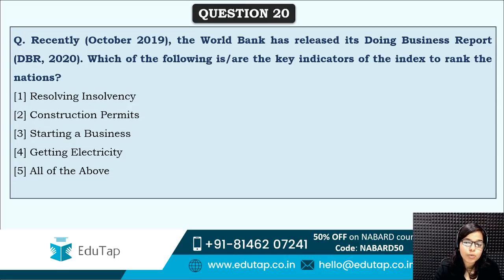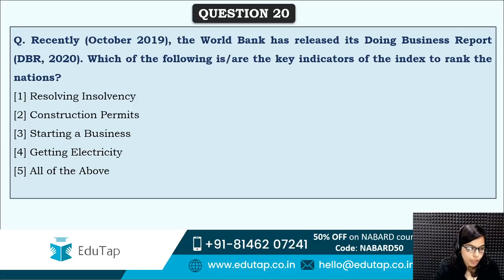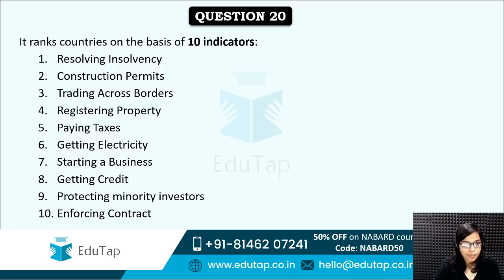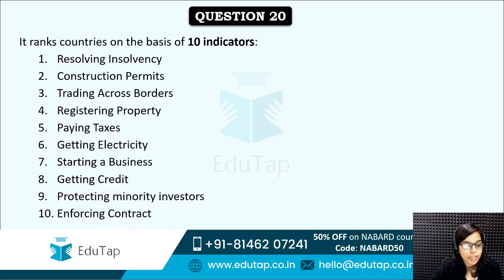Next: the World Bank has released its Doing Business 2020 report — the Ease of Doing Business report, which is very much in the news. Which of the following are the key indicators of this report? The correct answer is option five — all of the above. There are actually 10 indicators: resolving insolvency, construction permits, trading across borders, registering property, paying taxes, getting electricity, starting a business, getting credit, protecting minority investors, and enforcing contract. You need to also remember India's rank in this index.